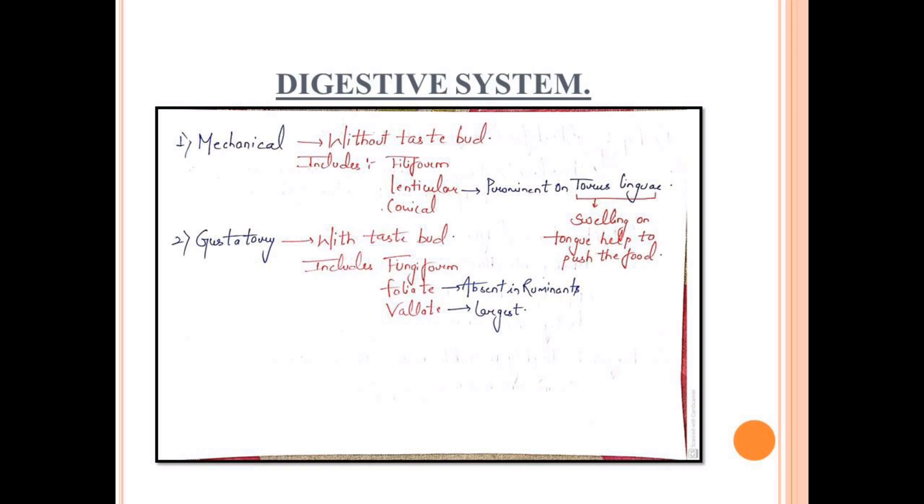Lenticular is characteristic that it is more prominent in torus lingua. Torus lingua is a swelling in the lateral side of the tongue that pushes food. Another type is gustatory papillae, which are taste buds. It includes fungiform, foliate, and vallate. Vallate is the largest type of papillae and foliate is characteristic in that it is absent in ruminants.